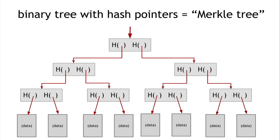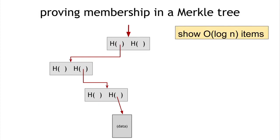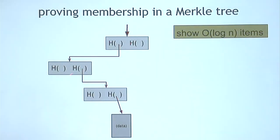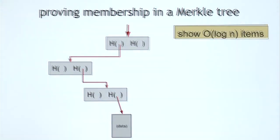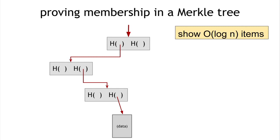Another nice feature of Merkle trees: if someone wants to prove that a particular data block is a member of the tree, they only need to show the path from that block up to the root — about log n items — and we verify the hashes along the way. With a very large number of data blocks, we can still verify membership in logarithmic time. The tree holds many items but we just need to remember the one root hash, which is only 256 bits. We can verify membership in logarithmic time and space.